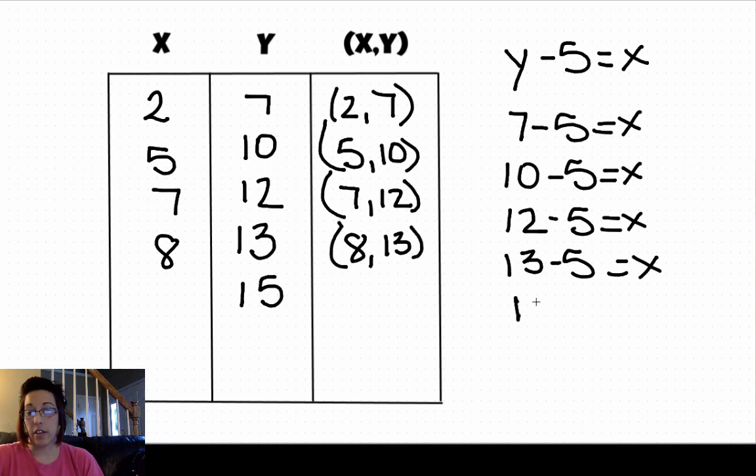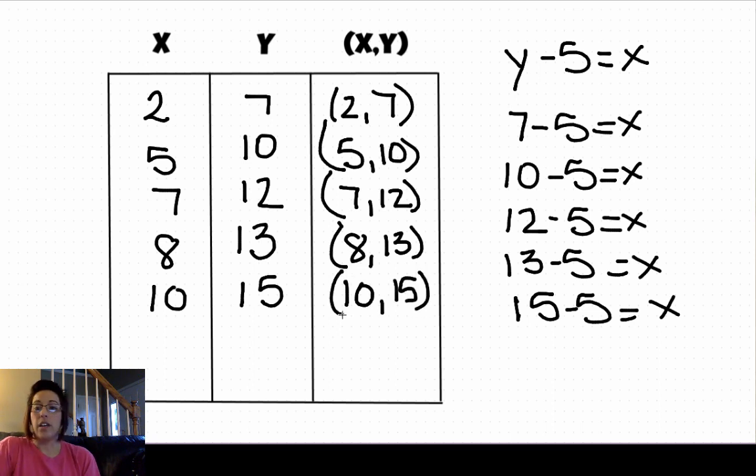And then 15 minus 5 equals x. Our number is 10, and we get the ordered pair 10, 15. I hope that this video has helped you see how to fill in xy charts following a pattern to complete them and make ordered pairs. Go ahead and move on with your practice today, and I will see you in the next video.